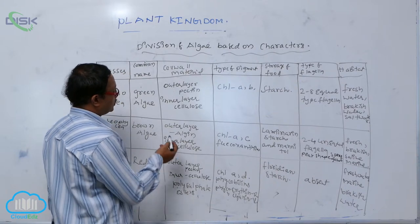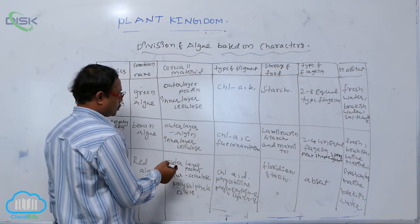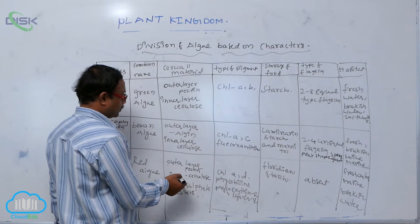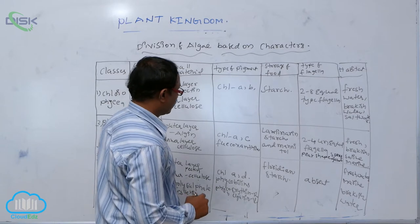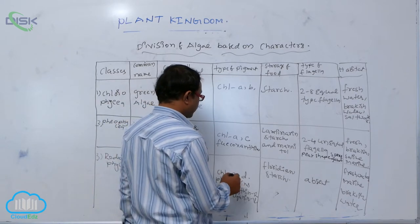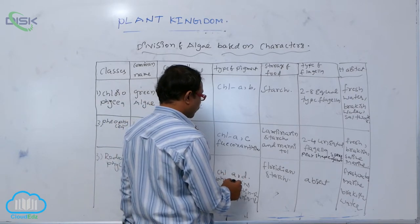The cell wall material has an outer layer of pectin and an inner layer of cellulose or polysulfide esters. The type of pigment is chlorophyll A and D, and phycobilins.